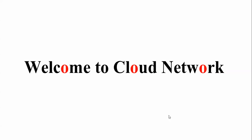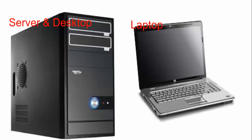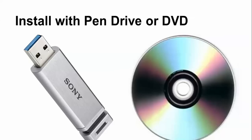Welcome to the Color Network. In this tutorial I will show you how to install Ubuntu 14.10, which has been given the name Utopic Unicorn. You can install it using VirtualBox or VMware, and you can install the server, desktop, or laptop version with the help of a pen drive or DVD.